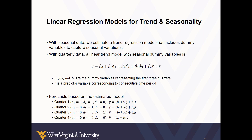With season-related data, we estimate a trend regression model that includes dummy variables to capture seasonal variations. For example, if we're working with quarterly data, a linear trend model with seasonal dummy variables is illustrated where D1, D2, and D3 are the dummy variables illustrating the first three quarters. And if the values for these dummy variables are all zero, the model knows the observation must then be related to the fourth quarter.